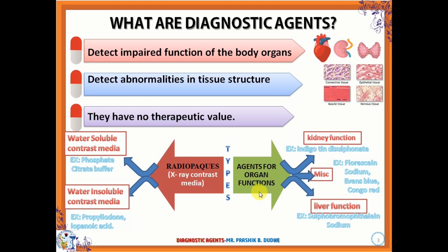The radio opaque substances are further divided according to their solubility in water. First is water-soluble contrast media — for example, phosphate citrate buffer. Second is water-insoluble contrast media — for example, propyliodon and iopenoic acid.